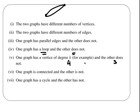One graph is connected and the other one is not. And if one graph has a cycle and the other one does not. Those are ways of identifying or stating that two graphs are not isomorphic.